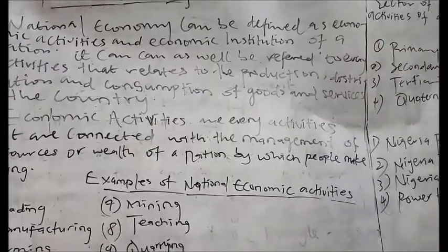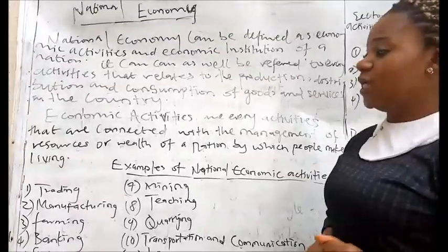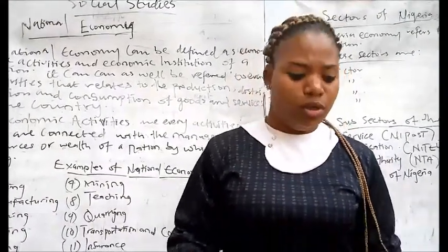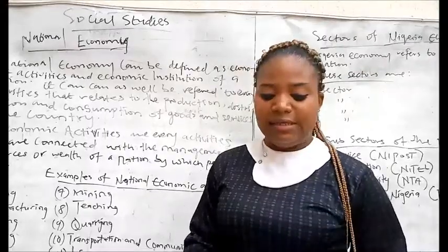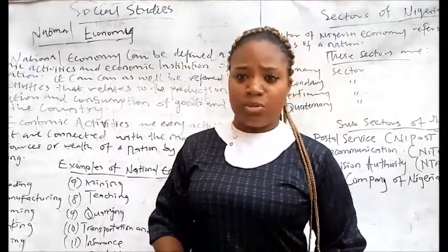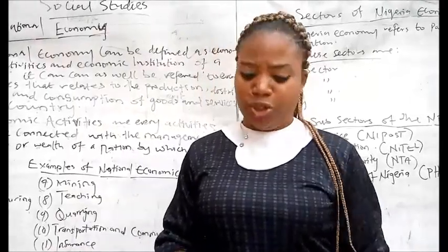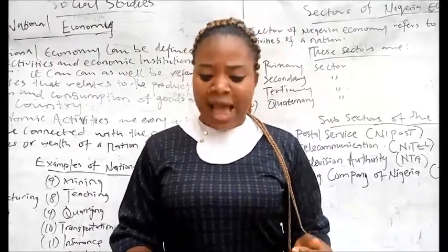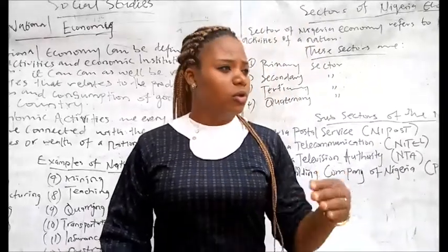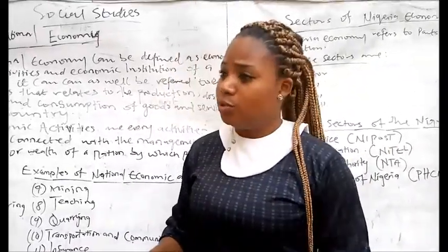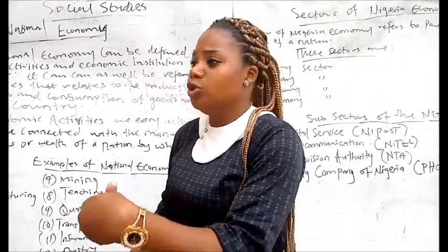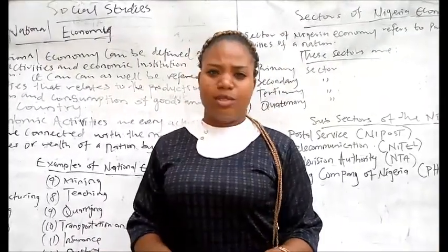What do we mean by consumption of goods and services? First of all, let's talk about production. To produce simply means to manufacture things, to make things. Distribution is the act of distributing those things you have produced. Then consumption — consumption involves the consumers, those that consume the food that is being produced.